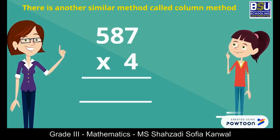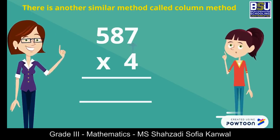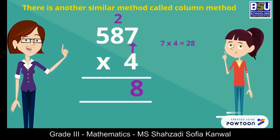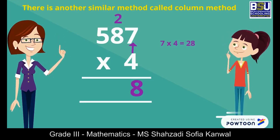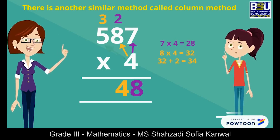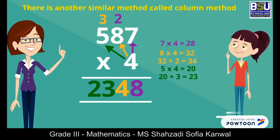In this method we start from the right and multiply 4 with the separate digits. Write the units of each result in the answer bar and take the tens carry. When we multiply with the final digit we will write the full result in the answer bar.